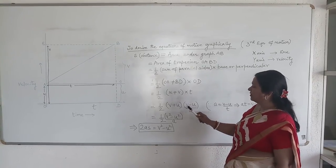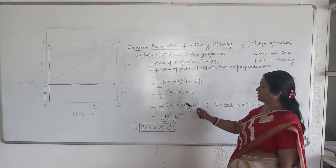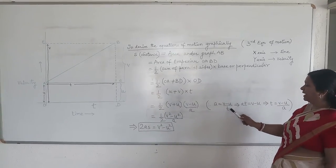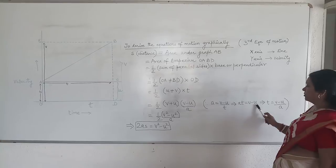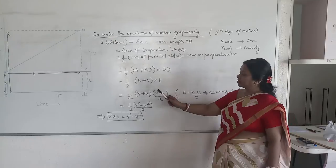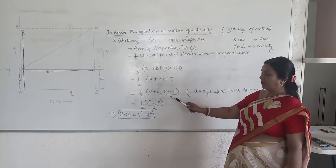And in place of T, we write V minus U upon A. How did this come? We know A is V minus U upon T. So AT will be V minus U. Now we put T which is equal to V minus U upon A in place of T. V minus U upon A.